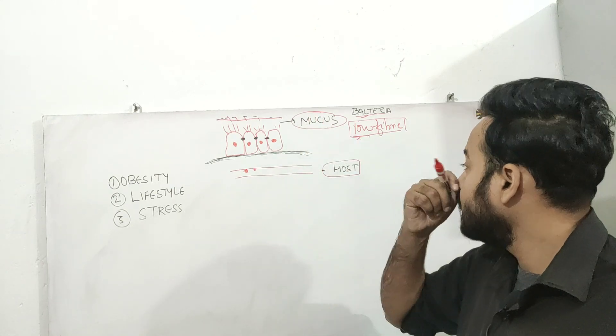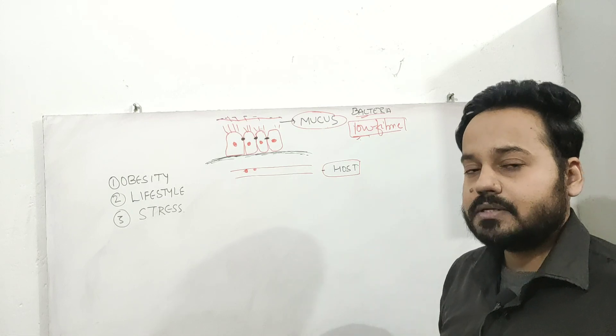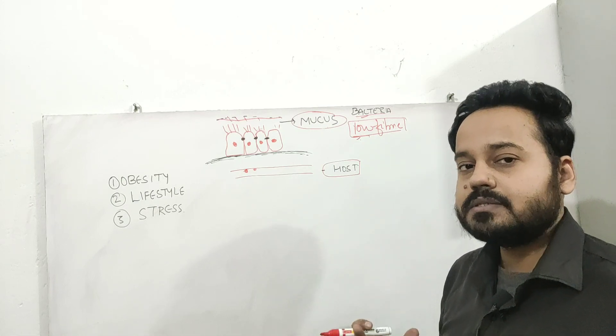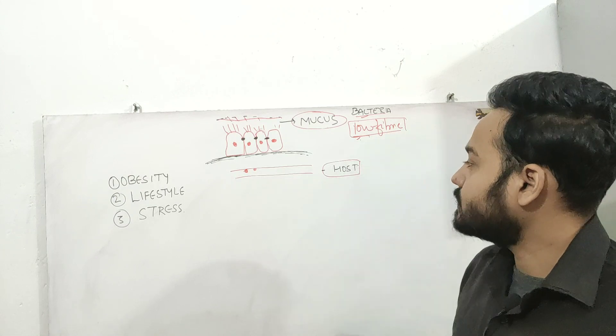So what causes development of mucus eating bacteria? It is low fiber. So those persons who eat foods which are low in fiber are more prone to develop mucus eating bacteria inside their gut and can cause development of autoimmune disorders. The first is mucus. So eat fiber rich foods from your vegetables, fruits. Fiber is very important.